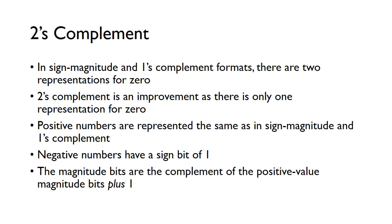The fact that we have two representations for zero isn't ideal. So there's a different method called two's complement, which gets rid of that — we only have one representation for zero. Positive numbers are represented the same way as in sign-magnitude and one's complement. Negative numbers have a sign bit of 1, but the magnitude bits are the one's complement plus 1 — that's what makes it two's complement.